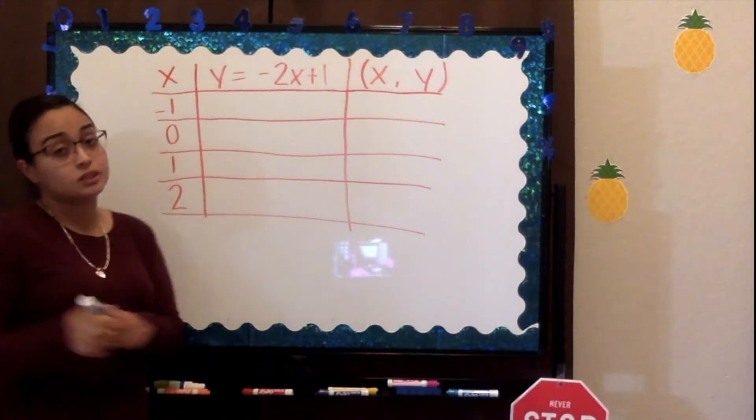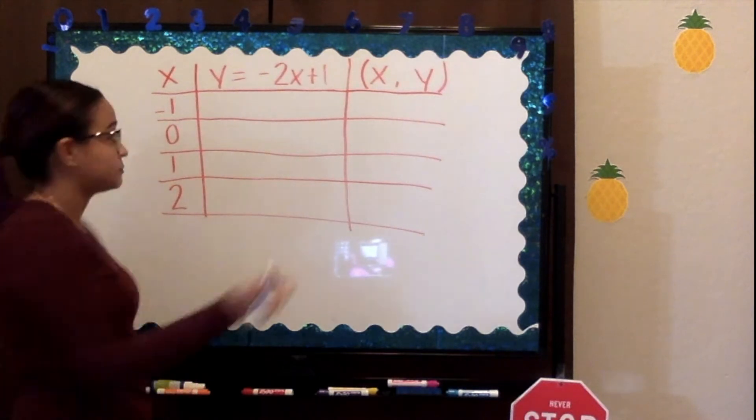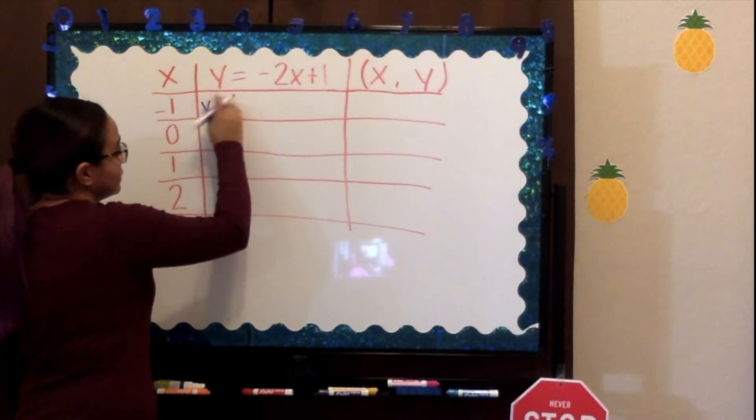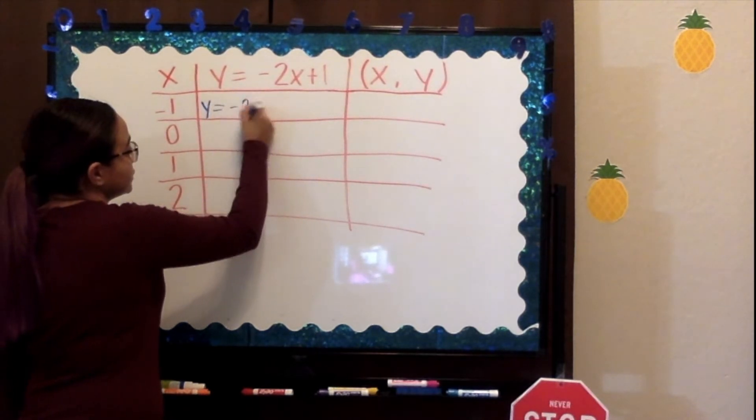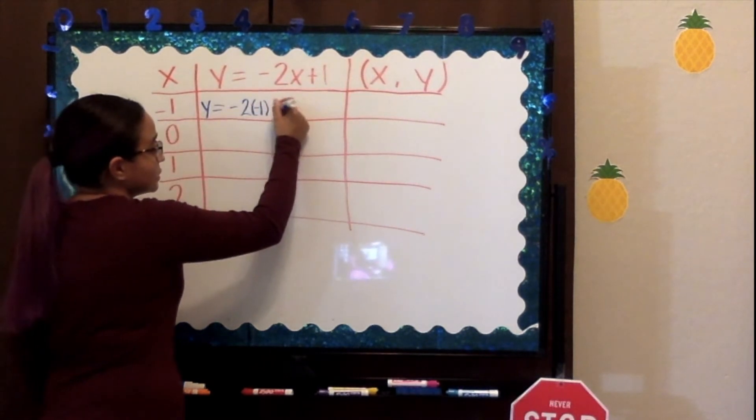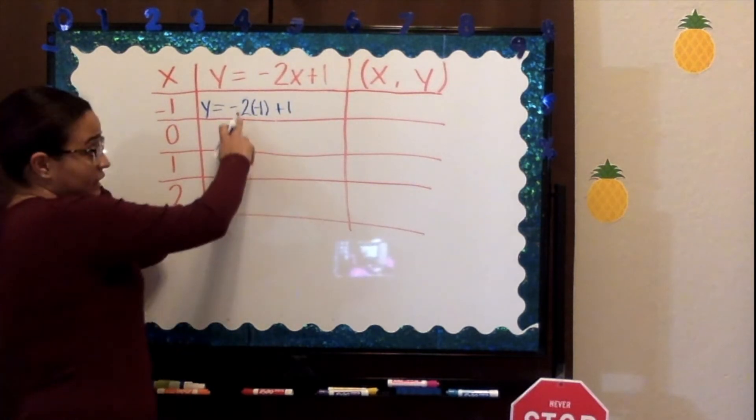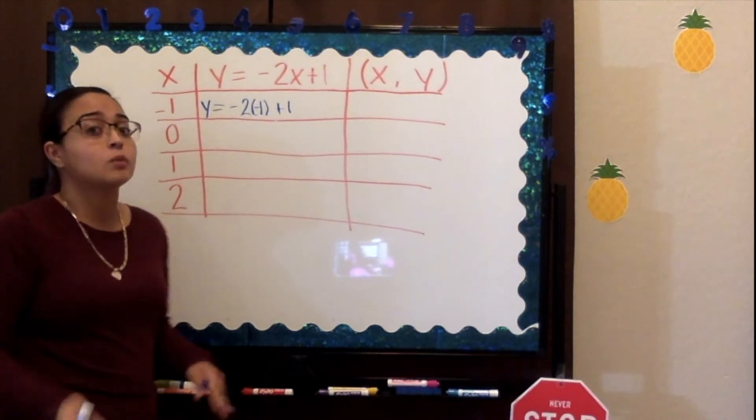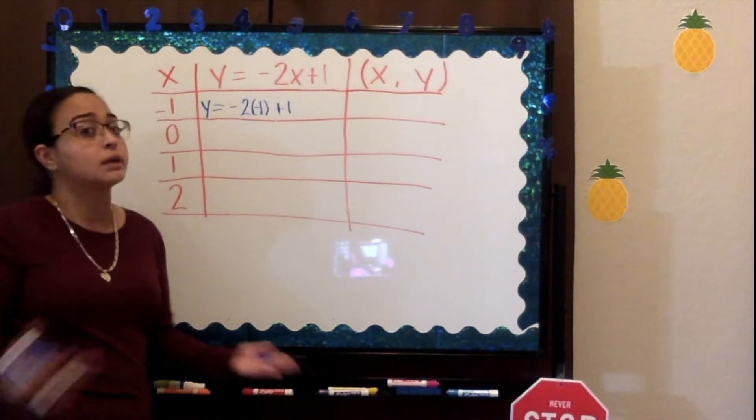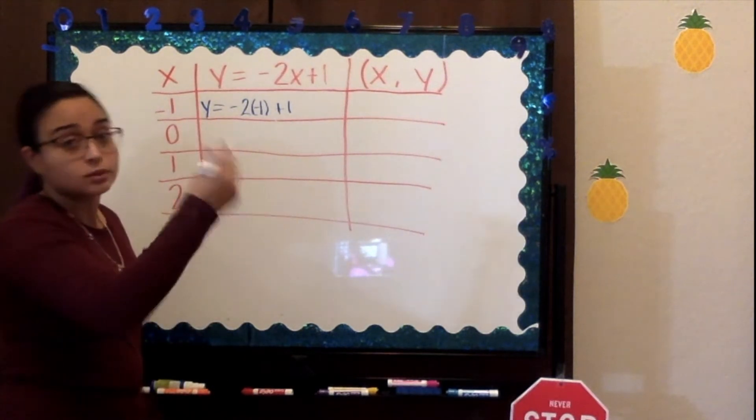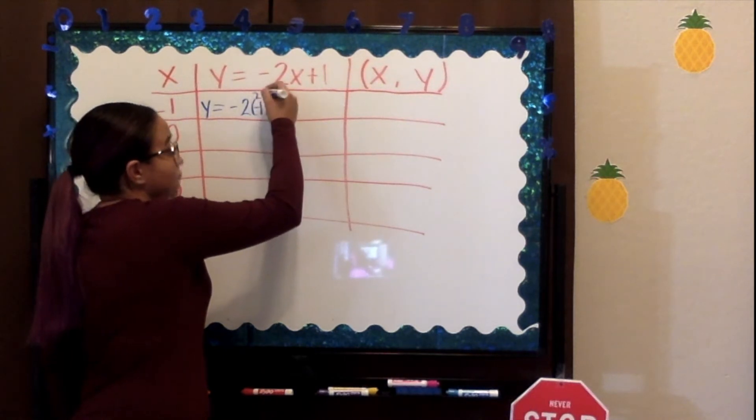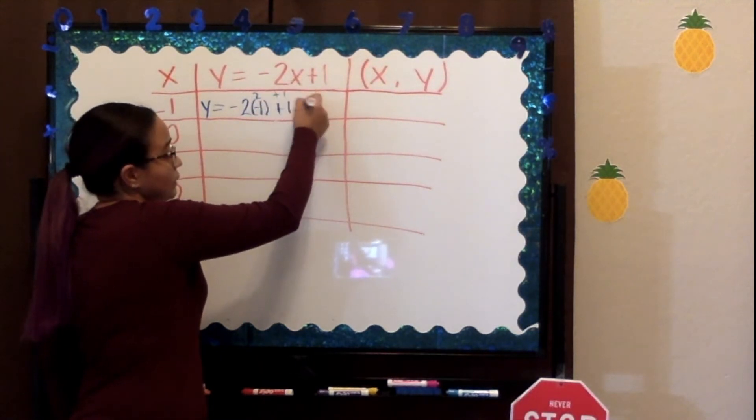Let's start with negative 1, which is our first value for x. We have y equals negative 2 times negative 1 plus 1. When we multiply negative 2 and negative 1, we get positive 2, because when you multiply a negative and a negative, you get a positive. And 2 times 1 equals 2. So we are left with 2 plus 1.